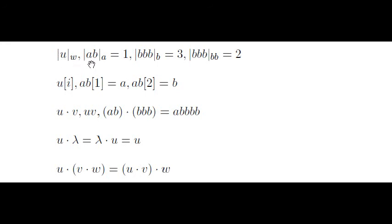For example, the number of occurrences of a in ab is 1, the number of occurrences of b in bbb is 3, and the number of occurrences of the word bb in bbb is 2, the one at position 1 and the one at position 2.